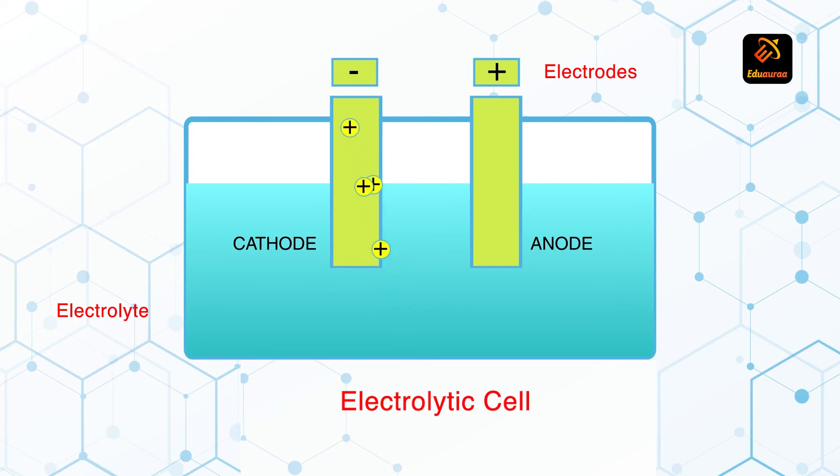Cations go to the cathode. Cations have what charge? Positive. And where is the positive charge going? To the cathode.